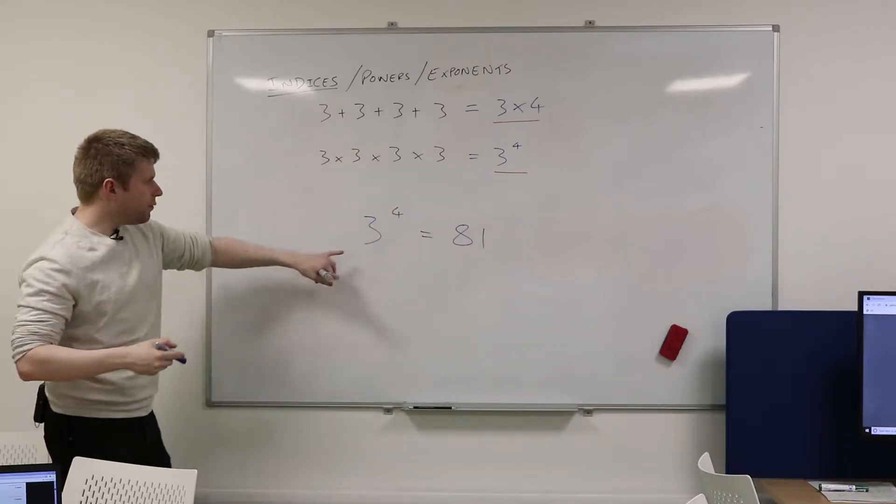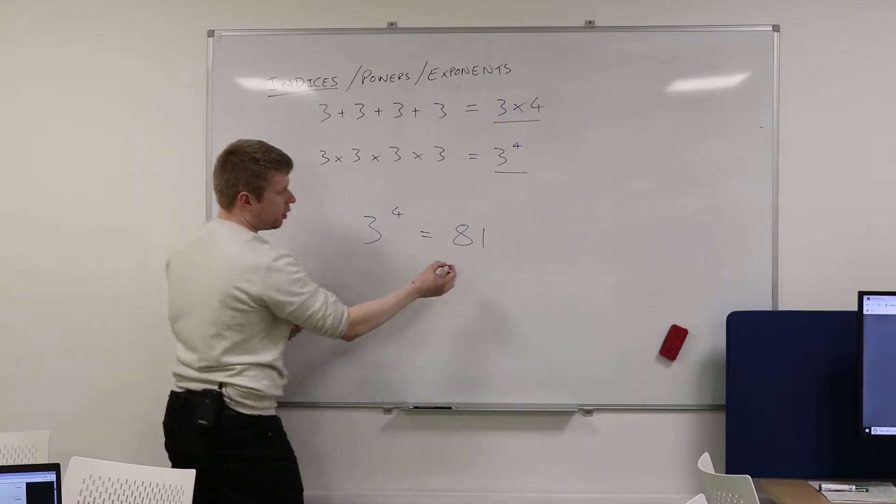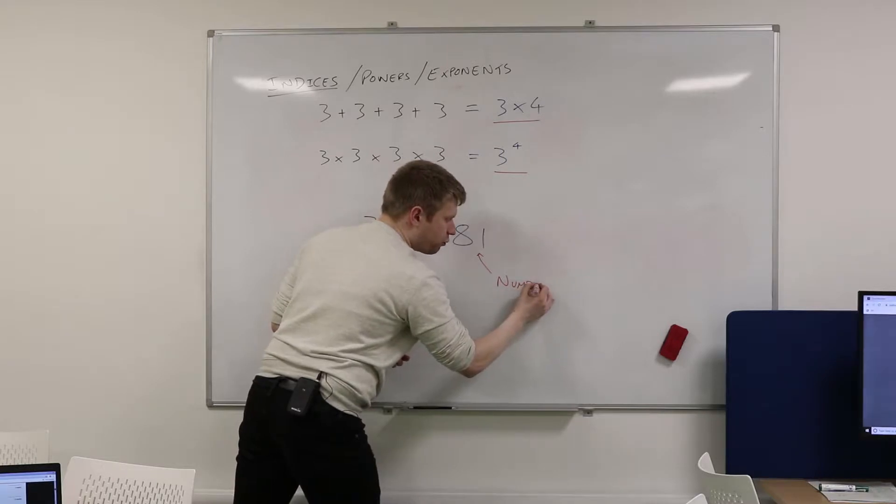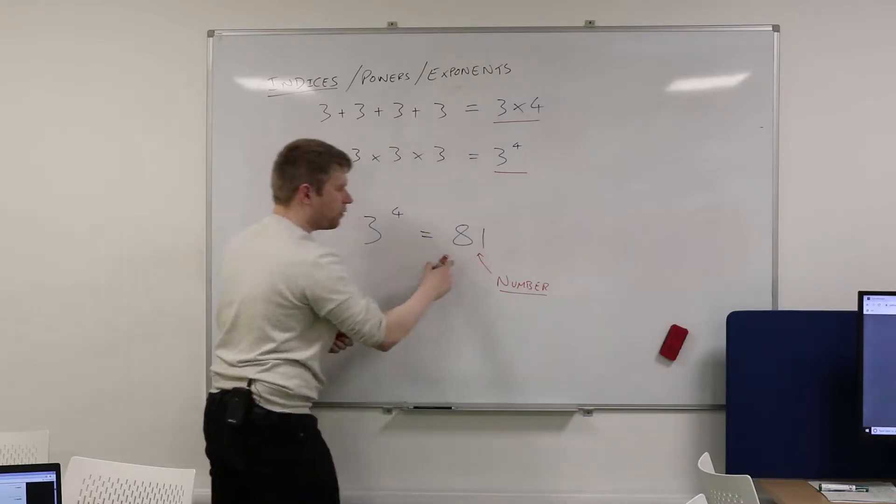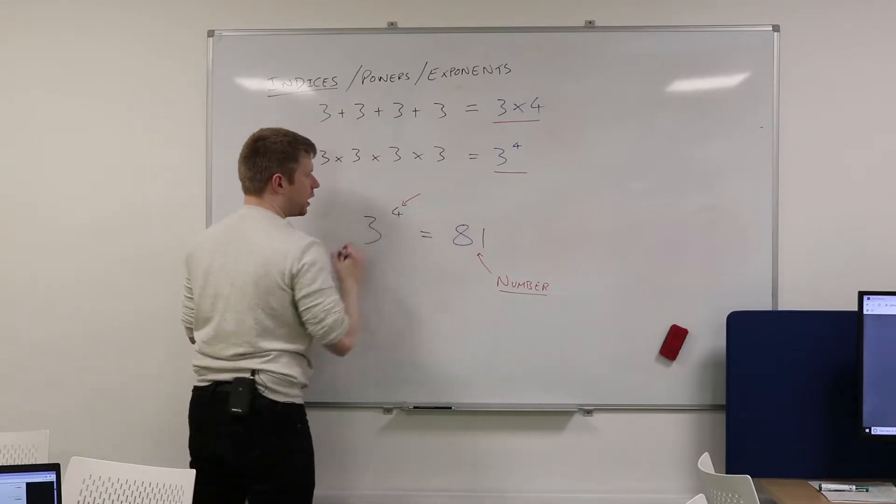So we can give each one of these numbers a name. This thing over here is just really a number. So there's nothing really that interesting about what happens over here on the right-hand side. What would we call this thing up here? What would we call the 4?